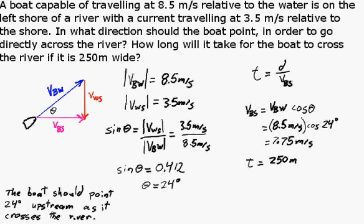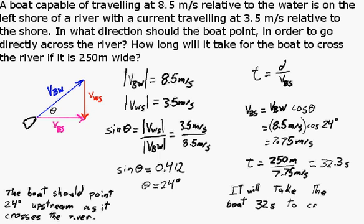The time will simply be 250 meters divided by 7.75 meters per second, so 32.3 seconds. Now, to round this off, we'll look at our rules for rounding off numbers. Every number in the question is given to two significant digits, so we'll round off the time to two significant digits. So it'll take 32 seconds for the boat to cross the river.